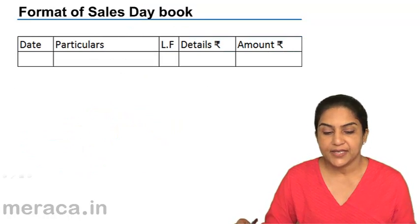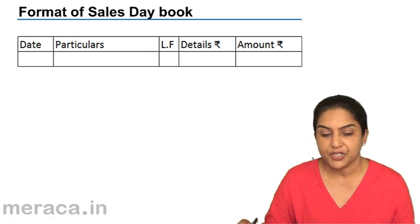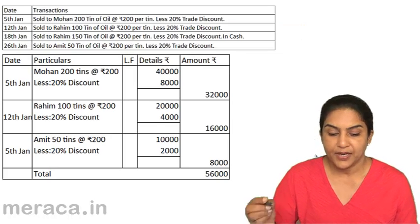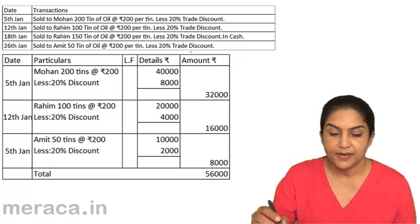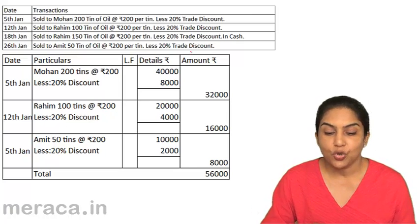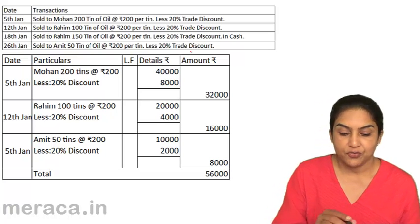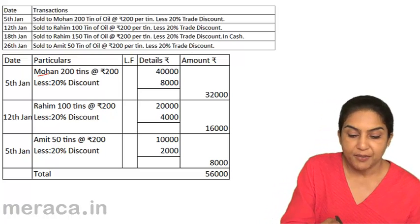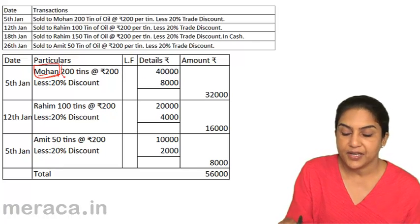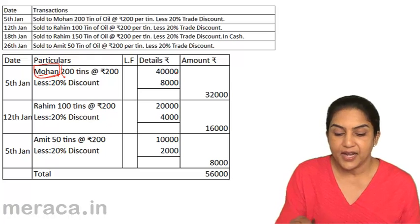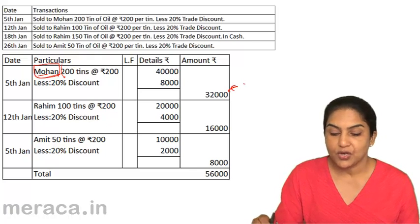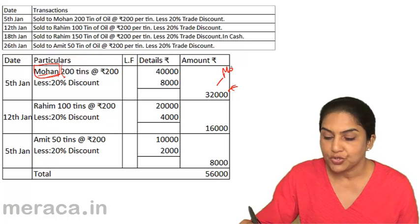The format, like I said, is exactly the same as in the case of a purchase day book. Let us consider an example. On 5th January, sold to Mohan 200 tins of oil at a rate of 200 per tin, less 20% trade discount. So 5th January, you write the name of the person. The detail is 200 tins at a rate of 200, less 20% discount — you get 32,000, which will be posted to Mohan's account.